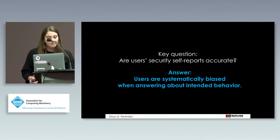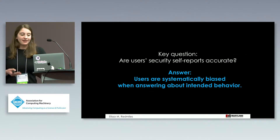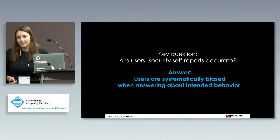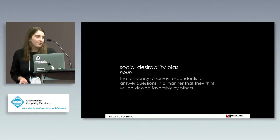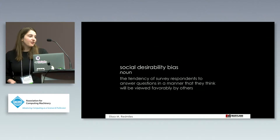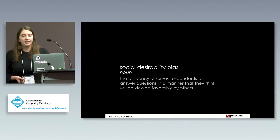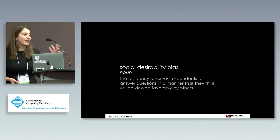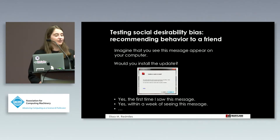What did we find? People are systematically biased when answering about their intended behavior — they tend to answer more positively, saying they'll update faster than the real-world data shows. Why does this happen? Most likely due to social desirability bias: the tendency of survey respondents to answer questions in a way that will be viewed positively by others. Even when answering an anonymous survey, you're still thinking about what this means about yourself, or being aspirational about your behavior.